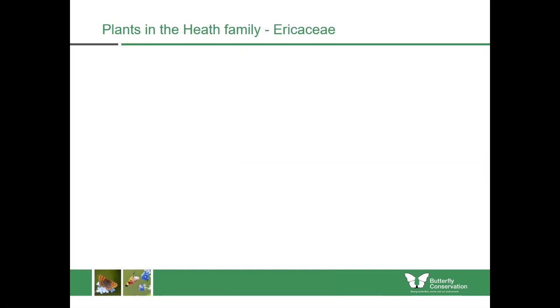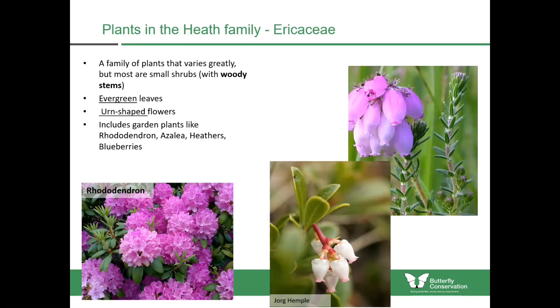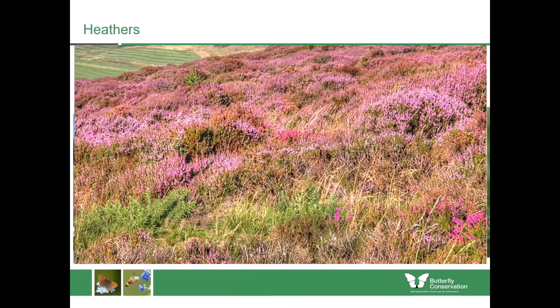Many of the plants found in upland areas belong in the heath family, also known as the Ericaceae. This family of plants varies greatly. Most of them are small shrubs with woody stems, tending to have evergreen leaves and urn-shaped flowers. It includes some garden plants like rhododendron, azalea, heathers and blueberries, and they're mostly found in acidic and infertile soils.